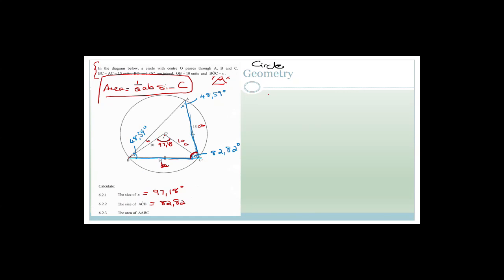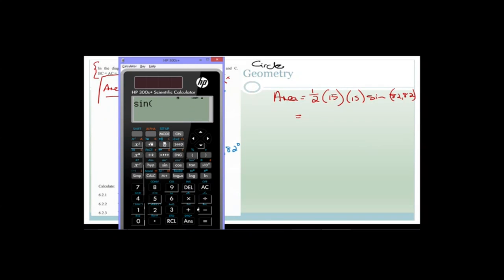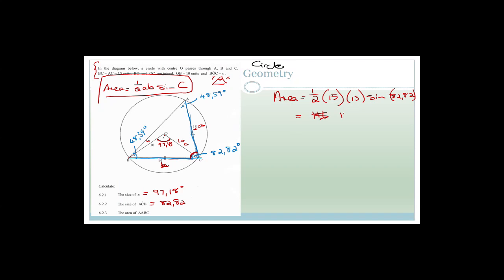Calculating: 0.5 × 15 × 15 × sin(82.82°) ≈ 111.62. So the area of triangle ABC is 111.62 square units.